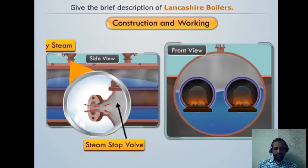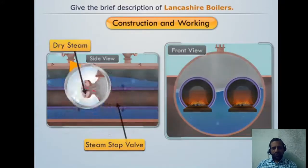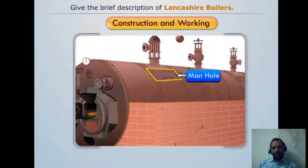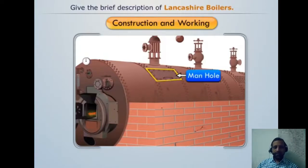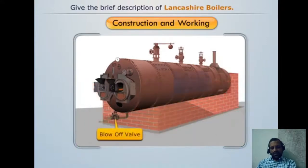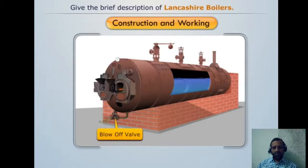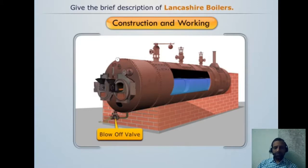Through the steam stop valve you can get steam out of the boiler for use in applications. A manhole is provided at the top and one more at the bottom, through which you can enter for repairs and maintenance. The blow-off valve is used to remove impurities, sediments, or scale deposits from the boiler frequently.